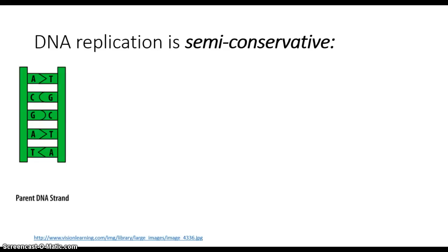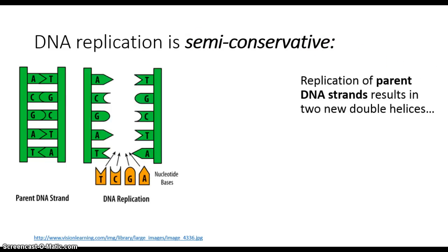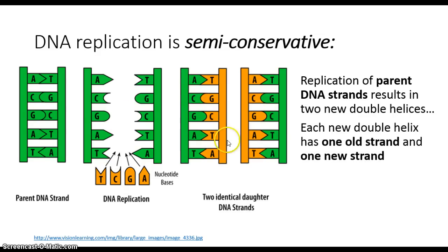We refer to this as semi-conservative DNA replication. Conservative means that it stays the same. Semi-conservative implies that it stays half the same. When you actually pry apart these two strands and line up the complementary bases, and then get two new double helices, each of these is part way old and part way new. Therefore, semi-conservative, half-conservative, half conserving the original DNA strand, and half being completely new.